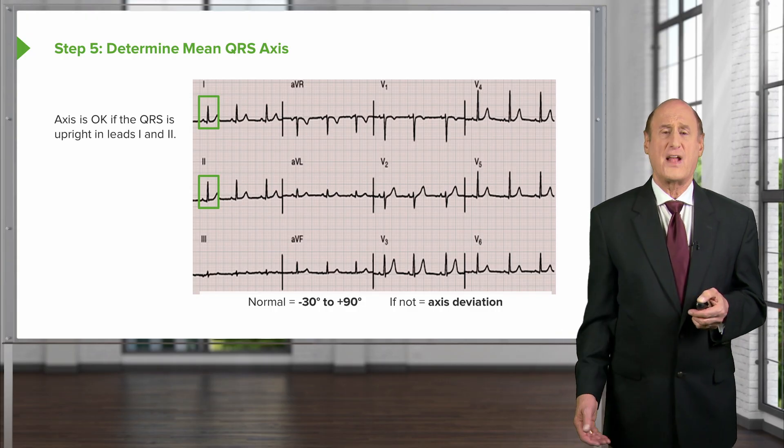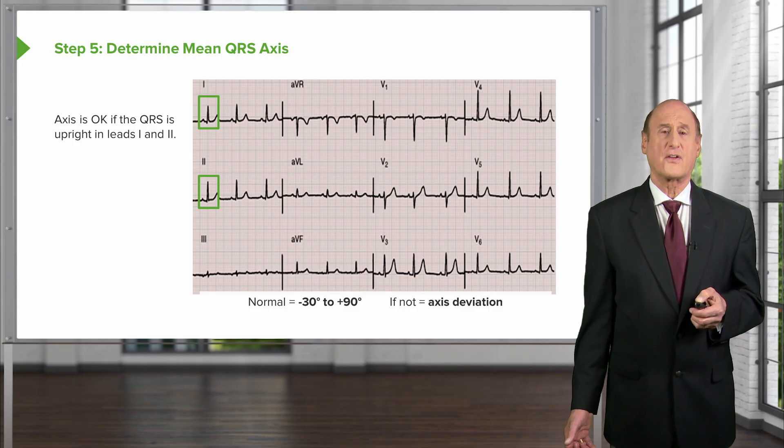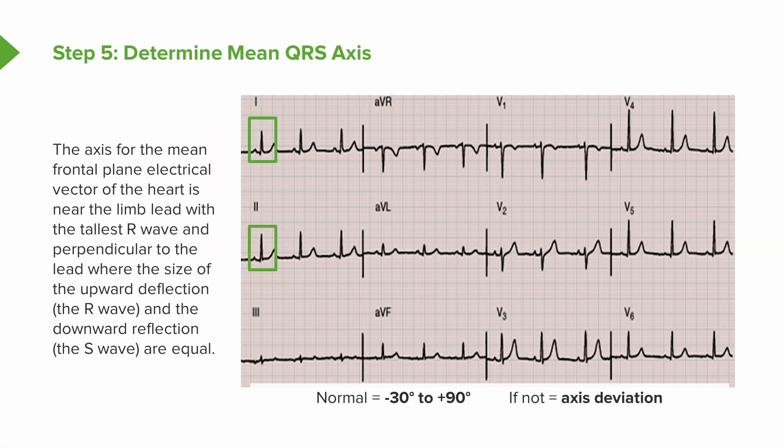We'll talk about how axis deviation is used in reading various electrocardiographic diagnoses. To reiterate: the axis for the mean frontal plane electrical vector of the heart is near the limb lead with the tallest R wave and perpendicular to the lead where the size of the upward deflection and downward deflection are equal. The upward deflection is called an R wave; the downward deflection is called an S wave.